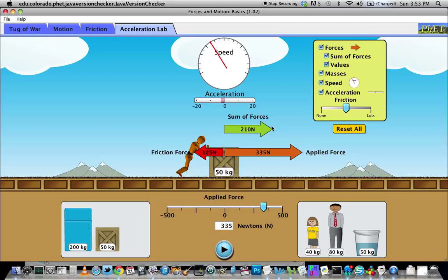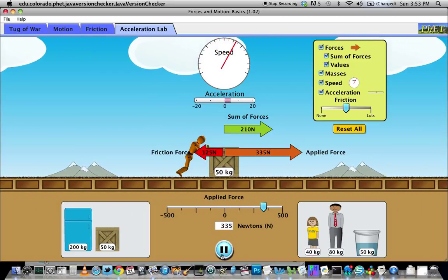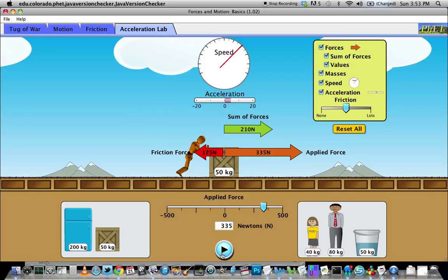But you can actually make a measurement using this green arrow here of the sum of forces. Once you've done that, your goal is to basically use this as a value for your independent variable of sum of forces and then take a reading for your acceleration off of this acceleration meter.